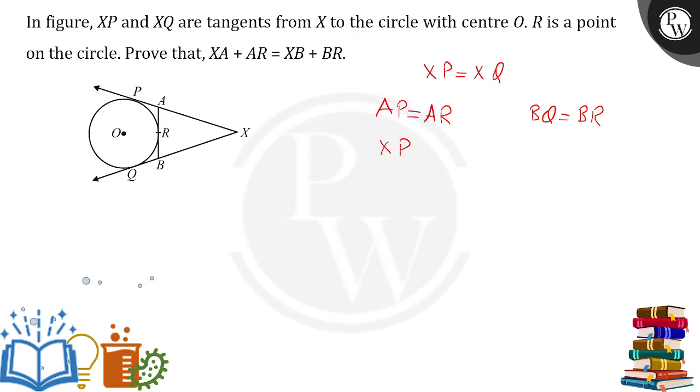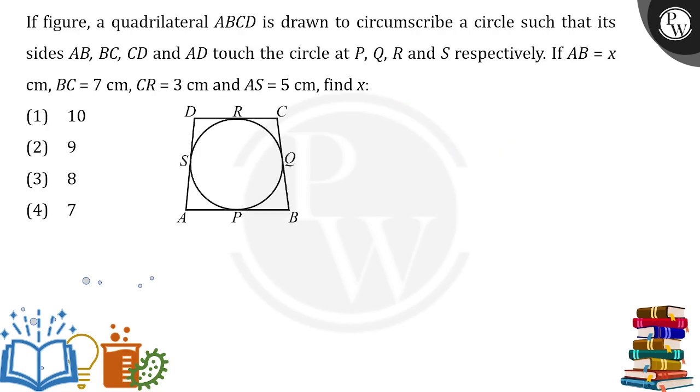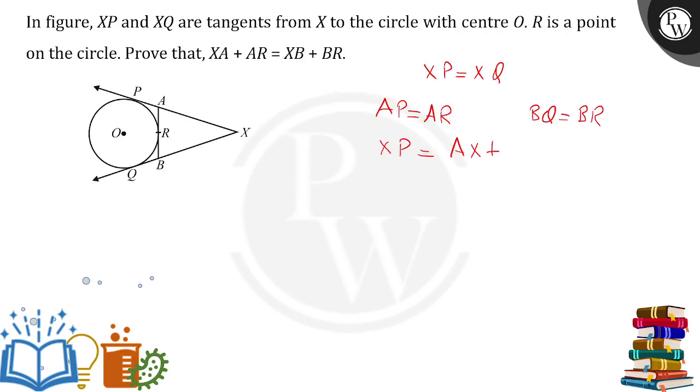Now if we talk about XP, XP is what? XP is AX plus AX or XA, whatever you want to call it, plus AP or PA, whatever you want to call it. So over here we are having PA, right? Now PA or AP you have written as AR, so let me replace it, that is AX plus AR. Or let me write in the form which you want to write over here, that is XA plus AR, right?